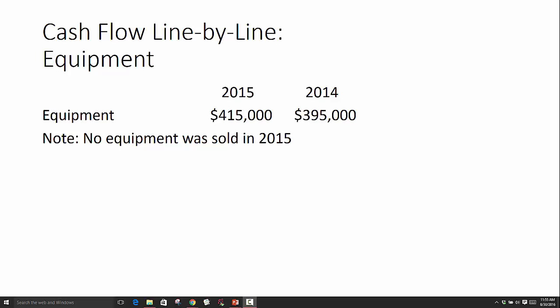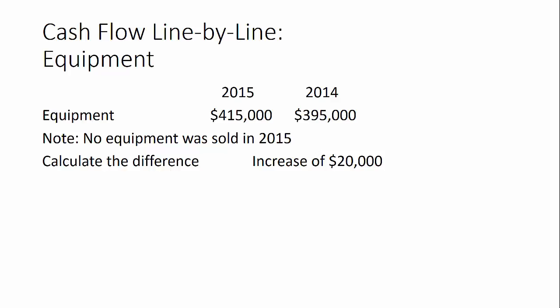The first thing I do when working through cash flow line by line is calculate the difference between the 2014 balance and the 2015 balance. We can see the balance increased — 415 is higher than 395 — and the difference is twenty thousand dollars. So our equipment balance increased by twenty thousand. Based on US GAAP and the historical cost principle, we can't adjust assets up for market value, so an increase means we purchased equipment.